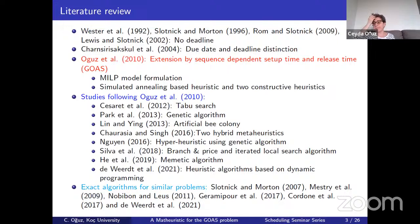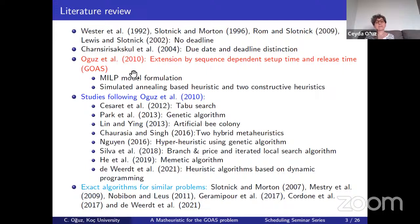When we look at the literature, the order acceptance and scheduling problem has been researched for more than three decades. It goes back to 1992, with some studies considering only due dates and no deadlines. The due date and deadline distinction came into the picture in 2004. Then in 2010 we have a study in which we extended the problem by including sequence-dependent setup time and release time.